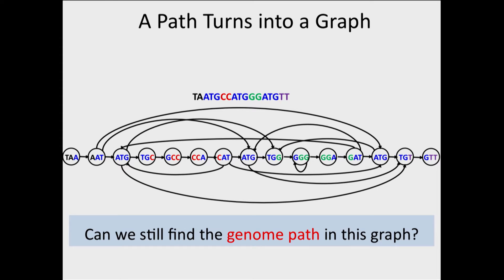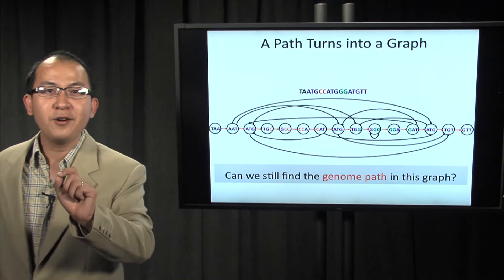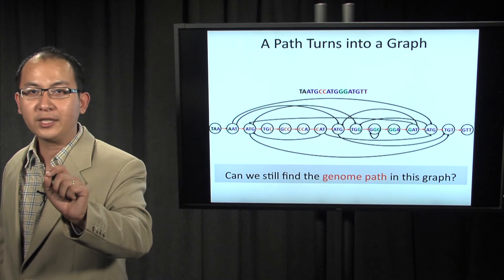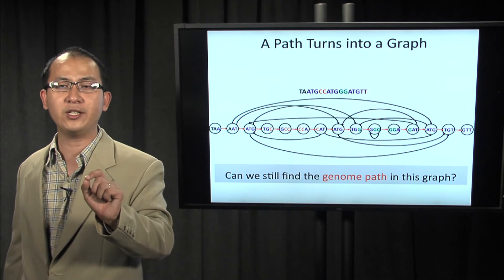Can we still find the genome path in this graph? Yes. How? This is the way. Please note that I cheated a little bit here, because these nodes are ordered according to their positions in the genome.